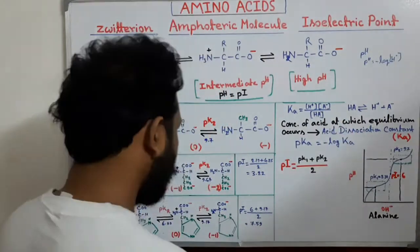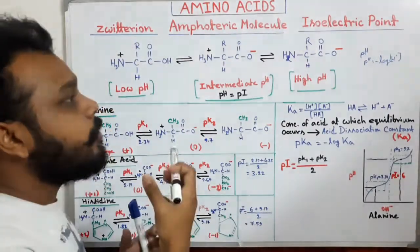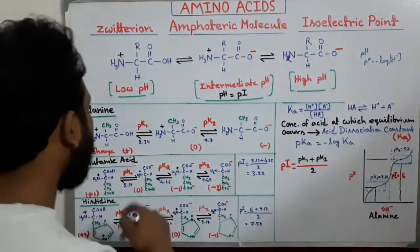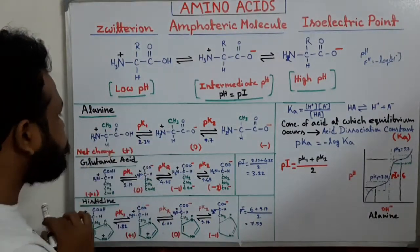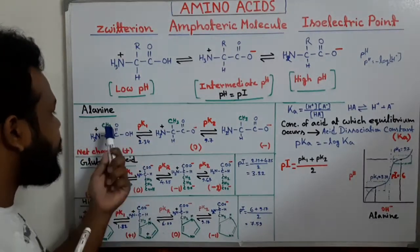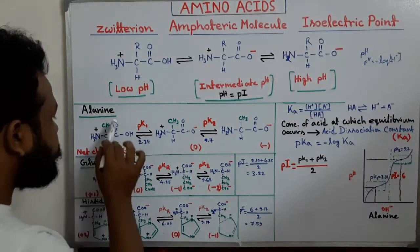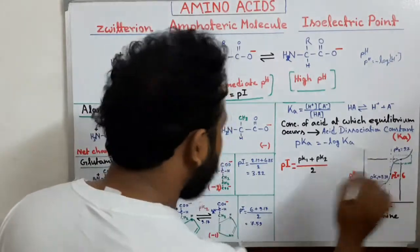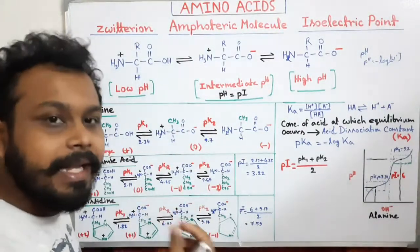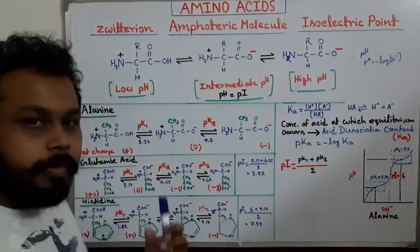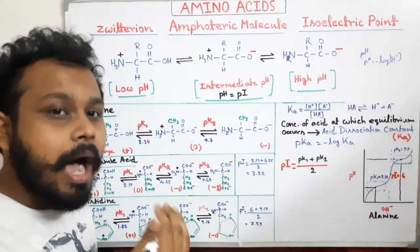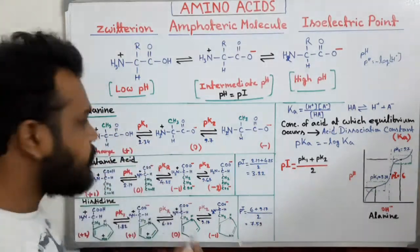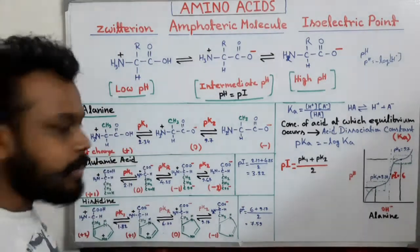Now we will see how different amino acids dissociate and how we can calculate the isoelectric point using the acid dissociation constant. First, let's discuss alanine. This is the alanine structure at low pH — its side chain is a CH3 group and the net charge is positive. When we raise the pH by adding base, the hydrogen ion is released from the amino acid.